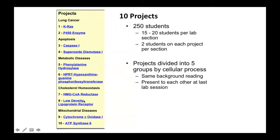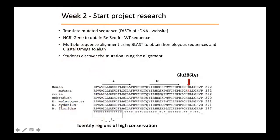The 10 projects were divided into five groups with two projects per disease. For example, project one involved the KRAS protein and a P450 enzyme — mutations in both of these proteins had been linked to lung cancer. Students working on either of these projects would share a background reading from Scientific American about the genetic basis for lung cancer risk. The two groups would read the same background article even though their proteins were different, and then they would present to each other at the last section.